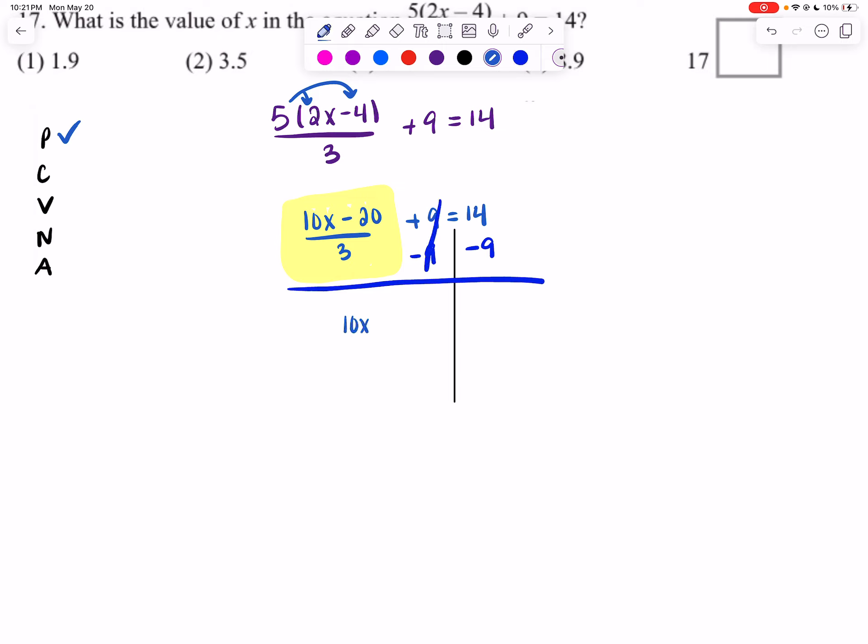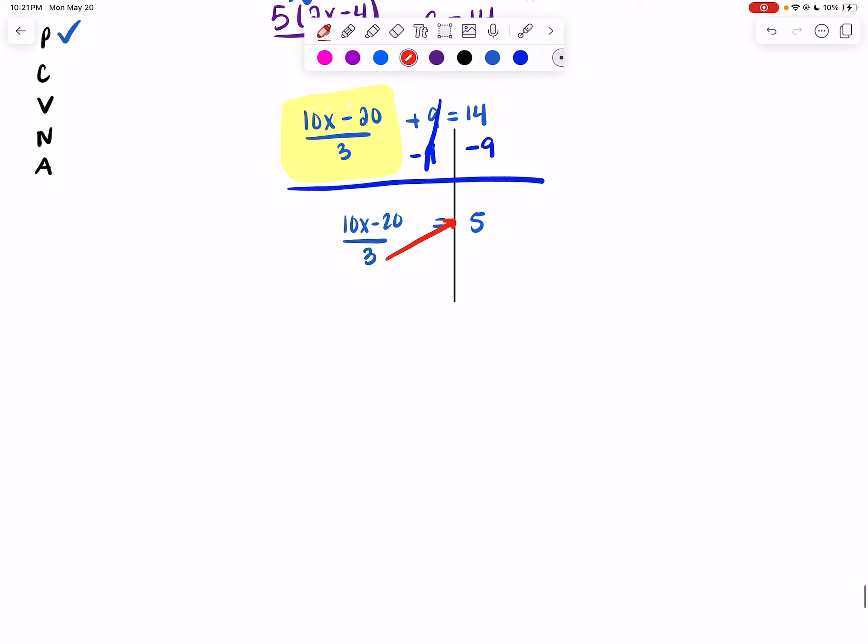So right now, I have 10x minus 20 divided by 3 equals 5. Now, remember, when we're dividing by a number, we can easily just cross-multiply it. So now I have 3 times 5, and 3 times 5 is 15. So now I have 10x minus 20 equals 15.